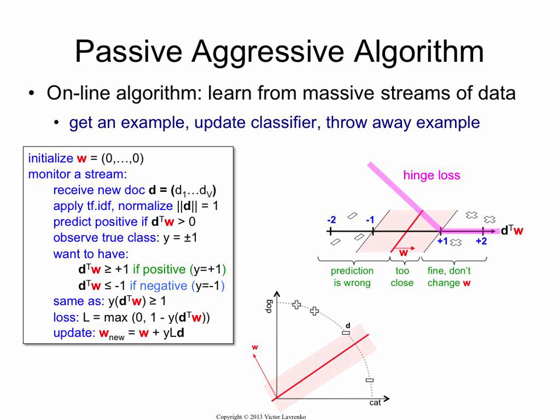In this case, because d transpose w is plus 1 times minus 1, so 1 minus minus 2. Oh, it's minus 1. So, let's see. So what does that update look like?